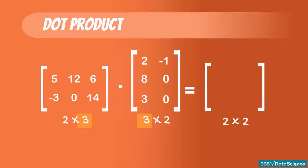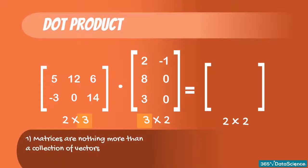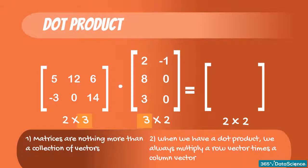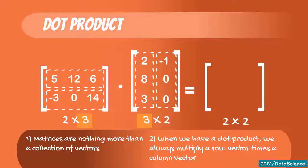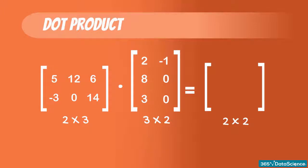Let me remind you two important things. First, matrices are nothing more than a collection of vectors. And second, when we have a dot product, we always multiply a row vector times a column vector. How does this apply to our case? Well, the first matrix is made up of two row vectors, 5, 12, 6, and minus 3, 0, 14. The second matrix is made up of two column vectors, 2, 8, 3, and minus 1, 0, 0. In order to find the dot product of the two matrices, we just need to find the dot product of the vectors they are made of.